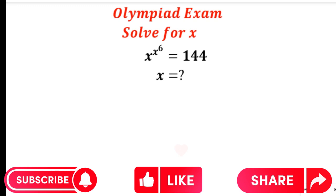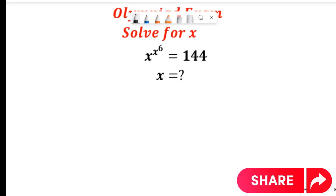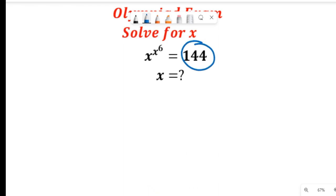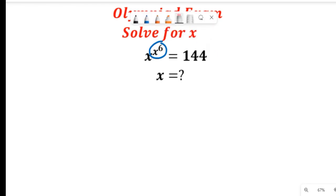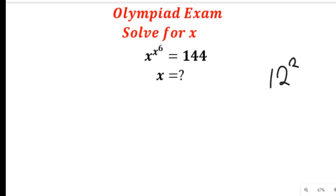Now let's look at this question. The first thing that should come to your mind is to simplify the right-hand side, which is 144. We'll think of reducing the exponent. Remember, 144 equals 12 squared — 12 squared gives us 144. So we have x to the power of x to the power of 6 is equal to 12 squared.